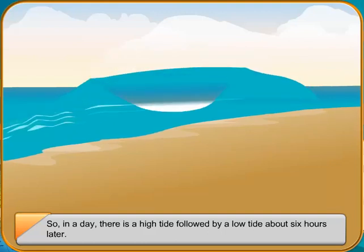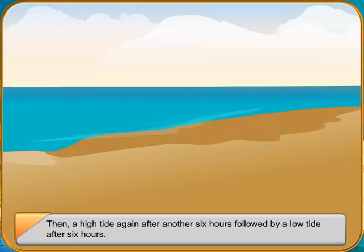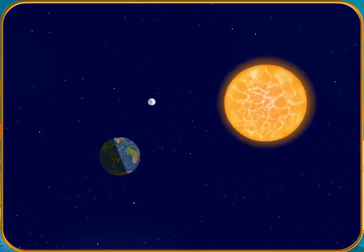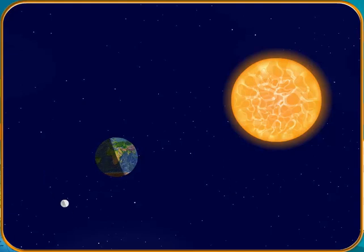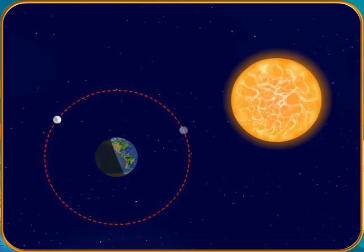When the sun, the moon are at right angles with the earth, the gravitational pull of the sun and the moon are at their weakest. We then have low high tides and high low tides which are known as neap tides. They occur on the days which are midway between full moon and new moon.